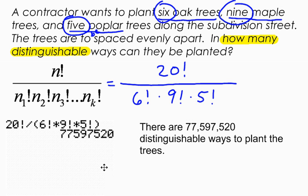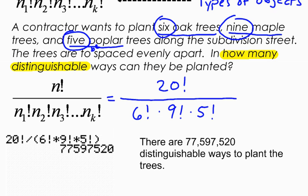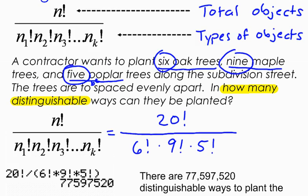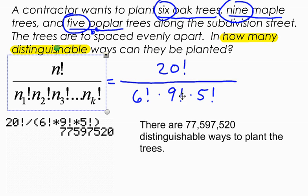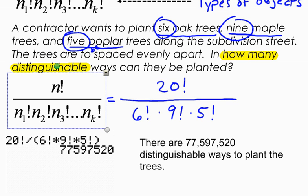There we go. So there's an example of how to use permutations for distinguishable permutations. Look for those key words, distinguishable, how many distinguishable ways. Once you set the formula up, please just use technology to get the final number of ways. So there's your little mini lesson on distinguishable permutations.